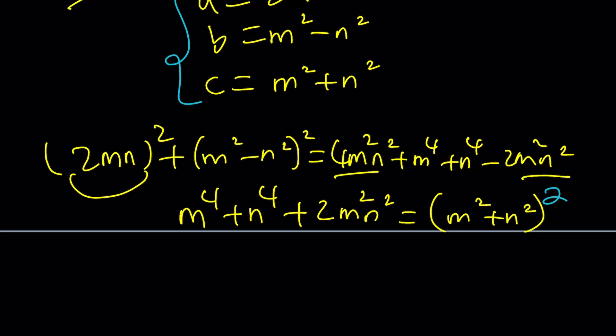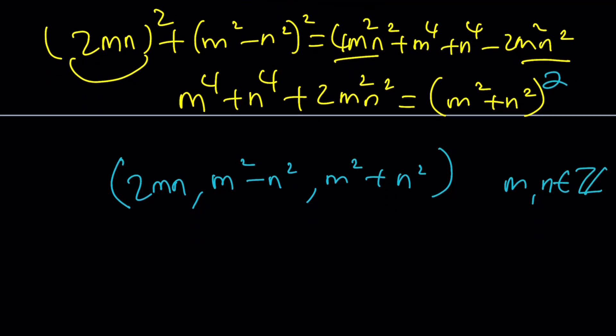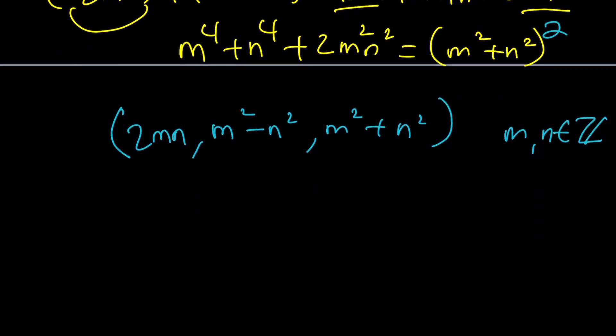Basically, now we've got a solution. If you write your a, b, c's as follows, then change the values of m and n. m and n are integers, by the way. You can get all the Pythagorean triples. Take a look. If m is equal to 2 and n is equal to 1, you get 4, 3, and 5.